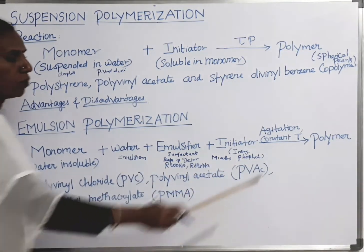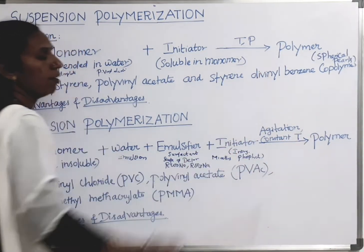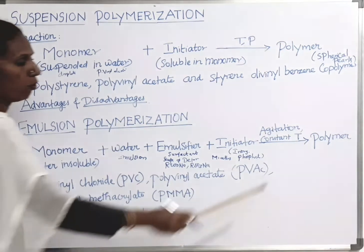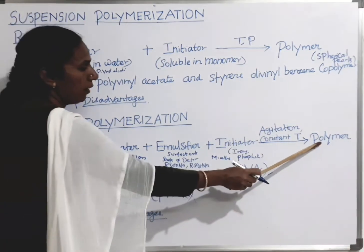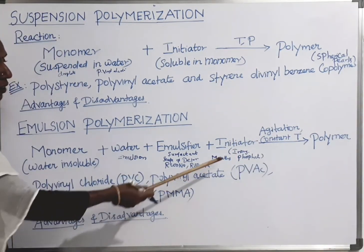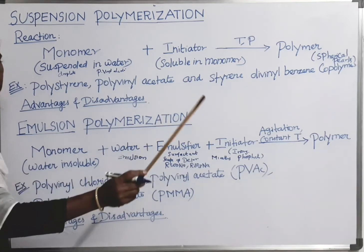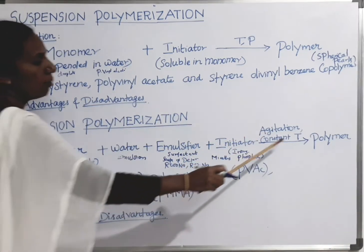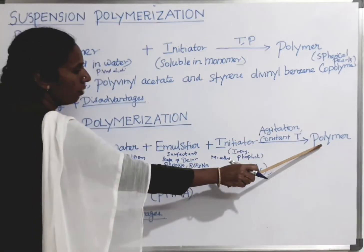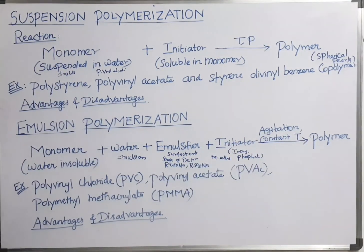The size of the micelles increases due to the formation of the polymer. There is no chain termination step, so a high molecular mass polymer is obtained in this emulsion polymerization.